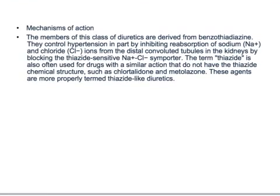For USMLE Step 1, you should know the mechanism of action — that's very important. The members of this class of diuretics are derived from benzothiadiazine. They control hypertension in part by inhibiting reabsorption of sodium and chloride ions from the distal convoluted tubule in the kidneys by blocking the thiazide-sensitive Na⁺/Cl⁻ symporter. The term thiazide is also often used for drugs with a similar action that do not have the thiazide chemical structure, such as chlorthalidone and metolazone. These agents are more properly termed thiazide-like diuretics.